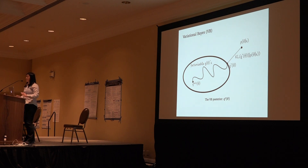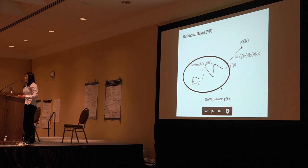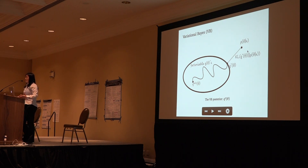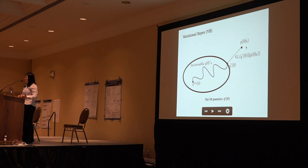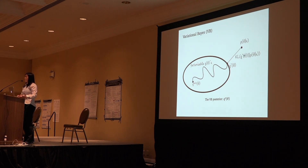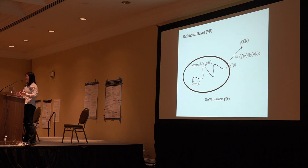To recap: we have this ellipse that includes all factorizable densities in the approximating family, and we find the member within this family closest to the exact posterior. We find that this exact posterior lies outside of our approximating family, because there is no reason to believe the exact posterior will be factorizable — it almost always lies outside. That means, in finite samples, there is really no hope to recover this exact posterior, because it is outside the optimization domain.